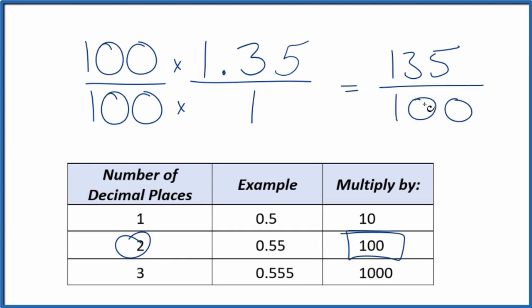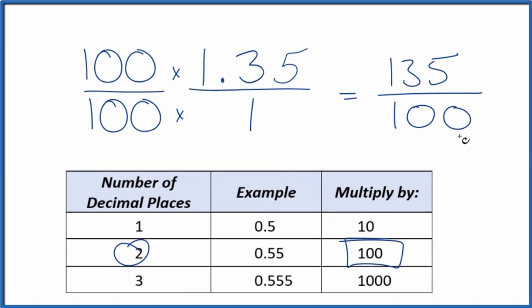And now we have a fraction, 135 over 100. That's equal to 1.35. We can divide each of these numbers by 5, and that would simplify this fraction. Let's do that.